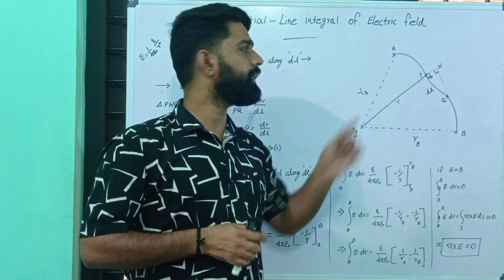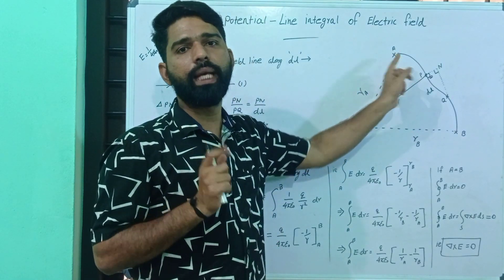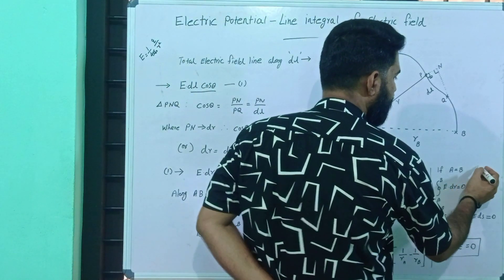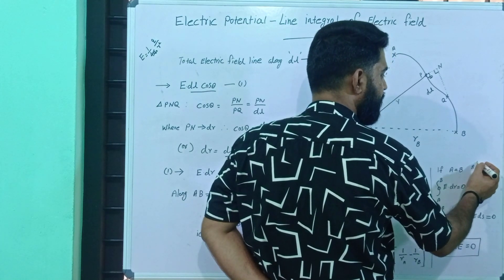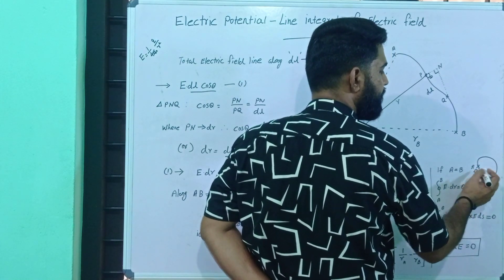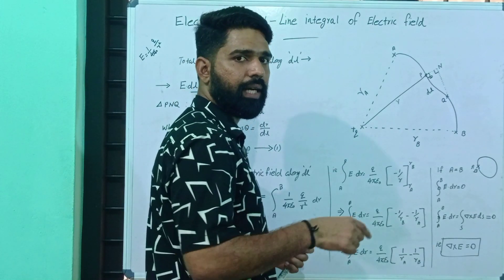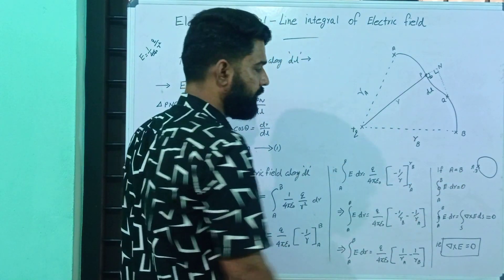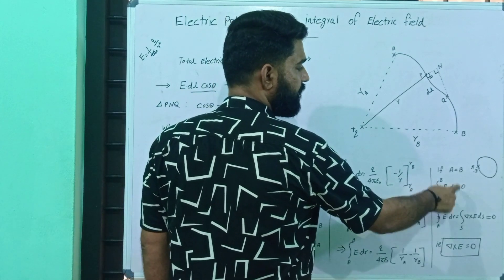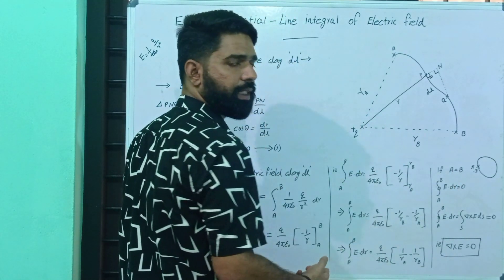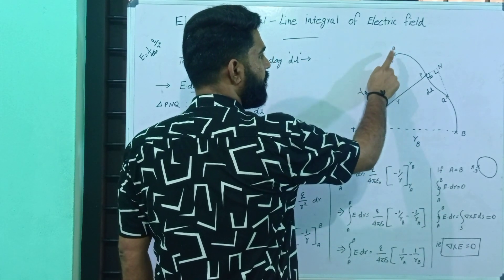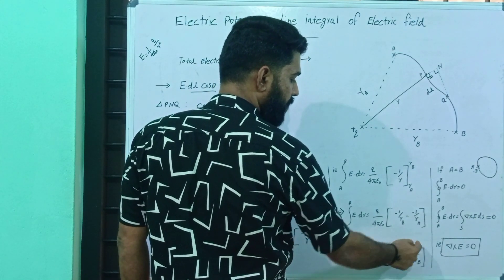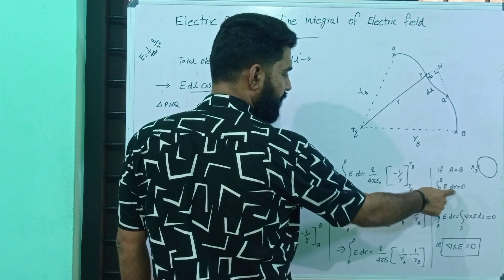If A equals B — that is, the initial point and final point are the same — the path becomes closed. If the path starts and ends at A, then A equals B, meaning r_A equals r_B. So the closed line integral becomes: ∮ E·dL with A equal to B, giving r_A equal to r_B. The E term becomes 1/r_A − 1/r_A = 0, so the closed integral ∮ E·dL equals 0.